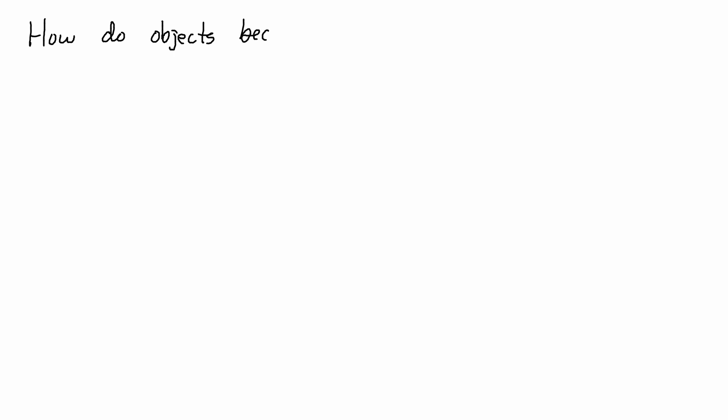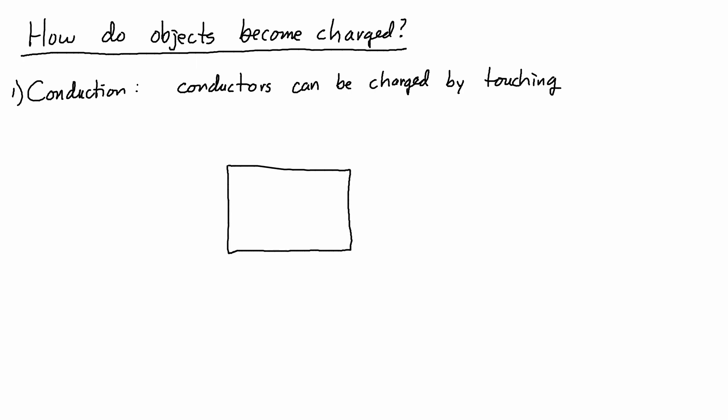One of the first questions that comes up is how do things get charged? One way that things can be charged is through conduction. Conductors can be charged just by touching. For example, if I have a block of metal and then I have a plastic rod that I'm reaching in with.